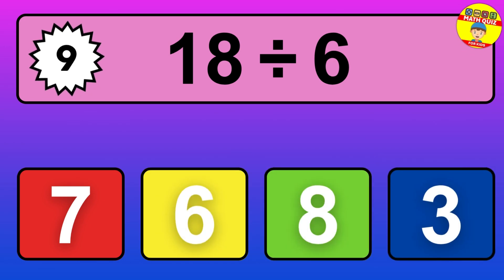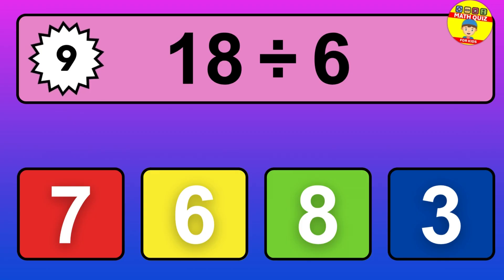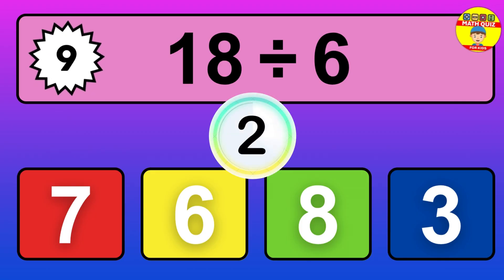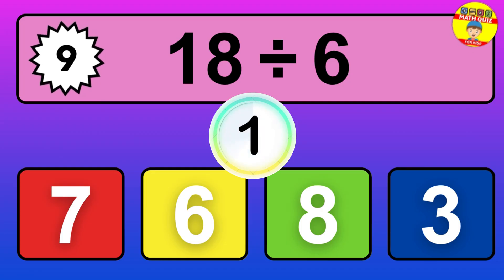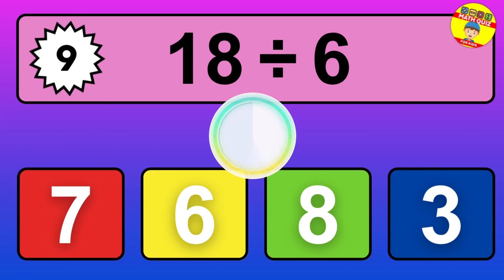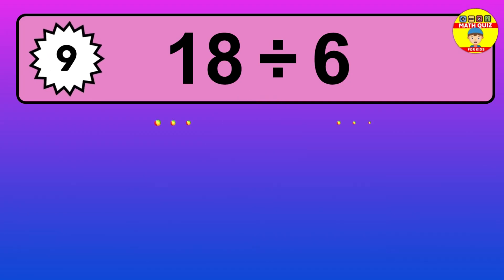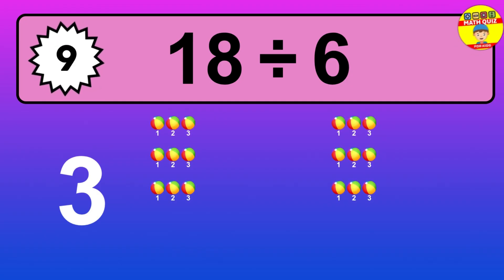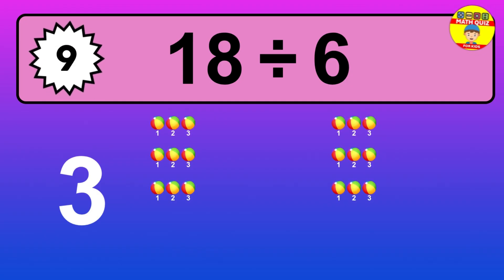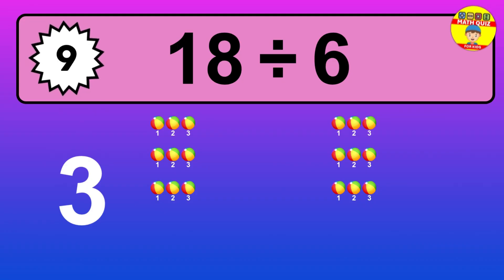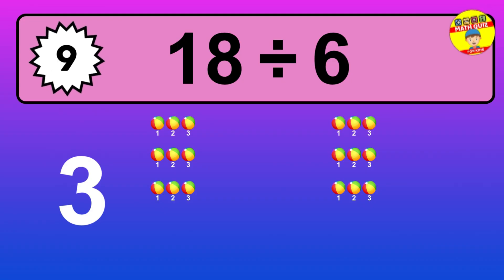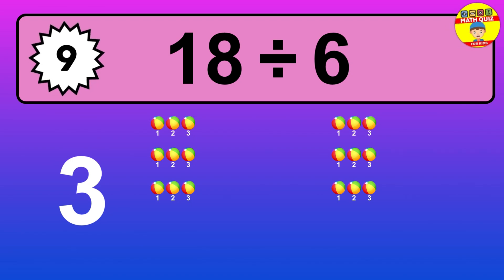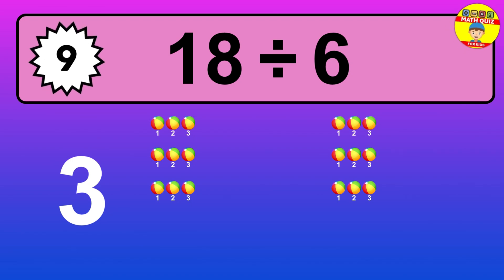18 divided by 6 — it's time to think. Let's go to the solution. Divide the number 18 by 6. Each group contains 6 units, so dividing 18 by 6 results in 3 equal groups. Thus, the result is 18 divided by 6 equals 3.